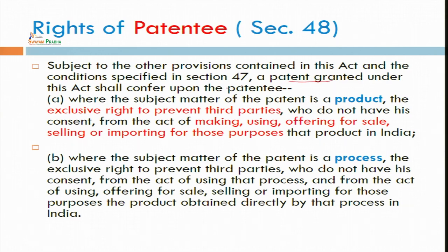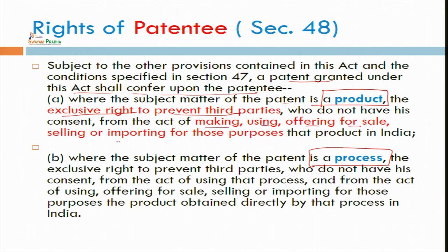Your specific rights are now started. The patent grant under this Act shall confer upon the patentee — where the subject matter is a product patent — the exclusive right to prevent third parties. Just like you are owner of a plot and can prevent other persons from trespass or encroachment, now you have a monopoly right for 20 years. You can prevent any third party from making, using, or offering for sale without your consent. Now you can debar other persons unless and until they take permission from you, pay royalty, take a license, or import that product into India.